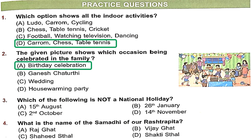Question 3: Which of the following is not a national holiday? There are three national holidays: Independence Day on 15th August, Republic Day on 26th January, and Gandhi Jayanti on 2nd October. But 14th November is not a national holiday — it is Children's Day. So Option D is the right answer.